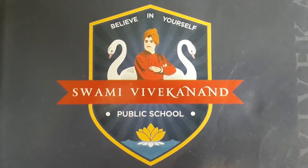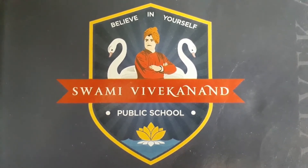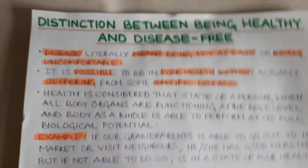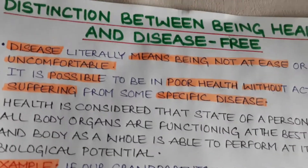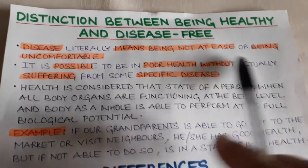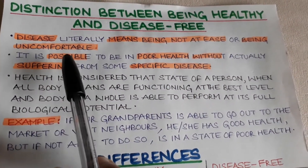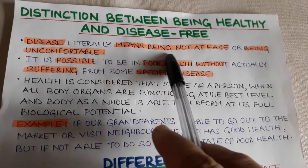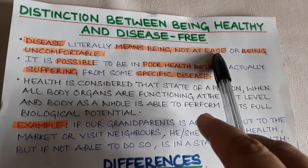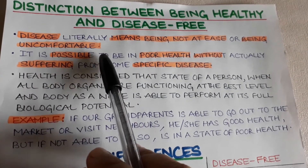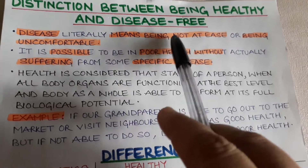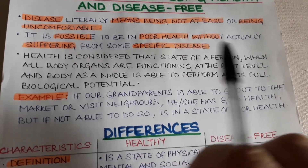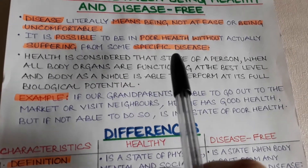In today's video, let us start our discussion with the distinction between being healthy and being disease free. Disease literally means being not at ease, or being uncomfortable. We can also define disease literally as 'disturbed ease' — when we are not in a state of ease, our ease has been disturbed, and that state literally means disease.